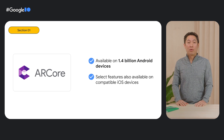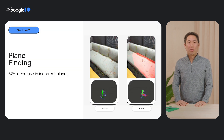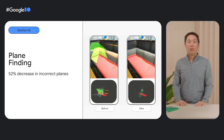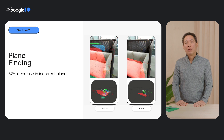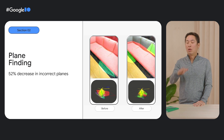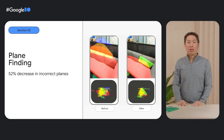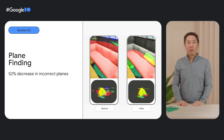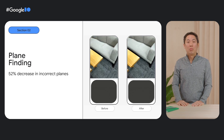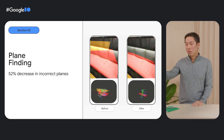ARCore is available on over 1.4 billion active Android devices. This past year, we have been investing in improving our core capabilities. For a virtual object to blend in correctly with the real world, it needs to be placed in a realistic way, at the right place. For instance, virtual chairs need to be correctly placed on the floor, not below or above it — just at the right height. Plane finding is a critical capability to achieve this. We are excited to announce that we've decreased incorrect planes by 52% using AI, such as the plane connecting the top of the couch pillows in this video.